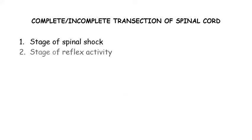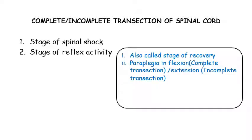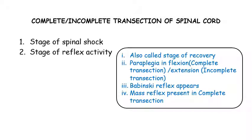Next is the stage of reflex activity, also known as the stage of recovery. If there is complete transection of the spinal cord, paraplegia in flexion appears, while if there is incomplete damage, the person develops paraplegia in extension. Babinski reflex is the first reflex that appears here. In case of complete transection of the spinal cord, mass reflex is present.